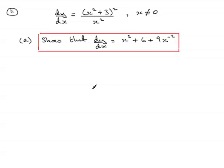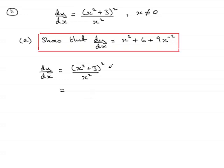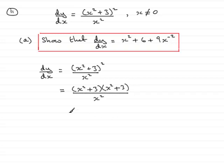So how do we do that? Well, first of all, we'll write down what dy/dx is equal to, which is (x² + 3)² over x². The next stage is to expand out the top. Some of you should be able to do this straight off, but I'll put it in its basic form, which is (x² + 3) times (x² + 3), all over x².